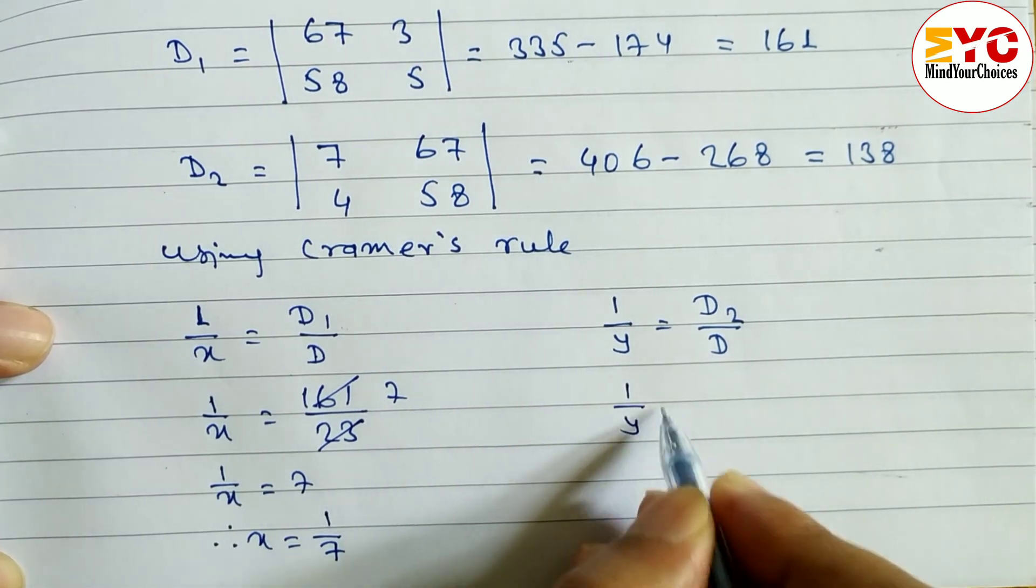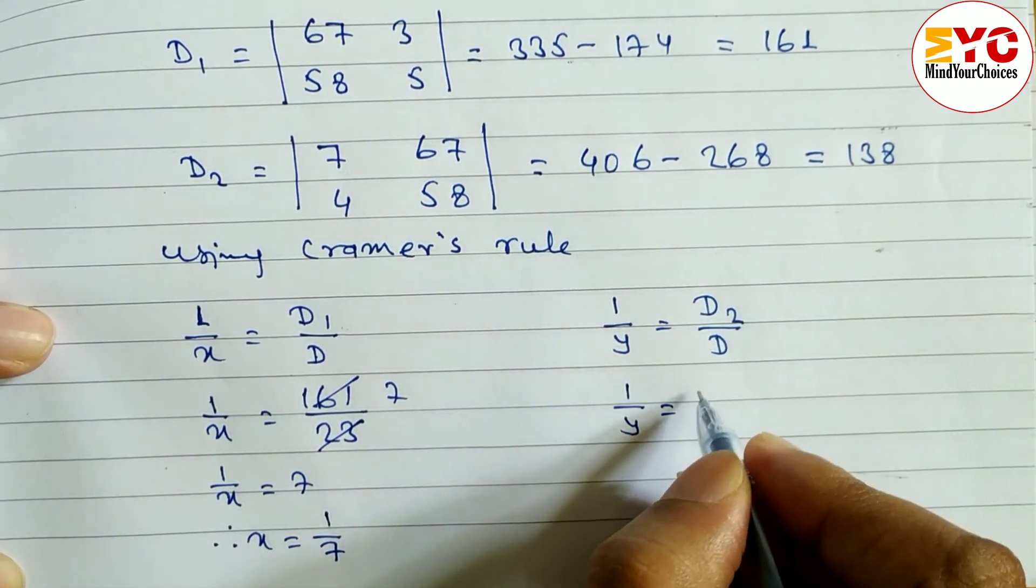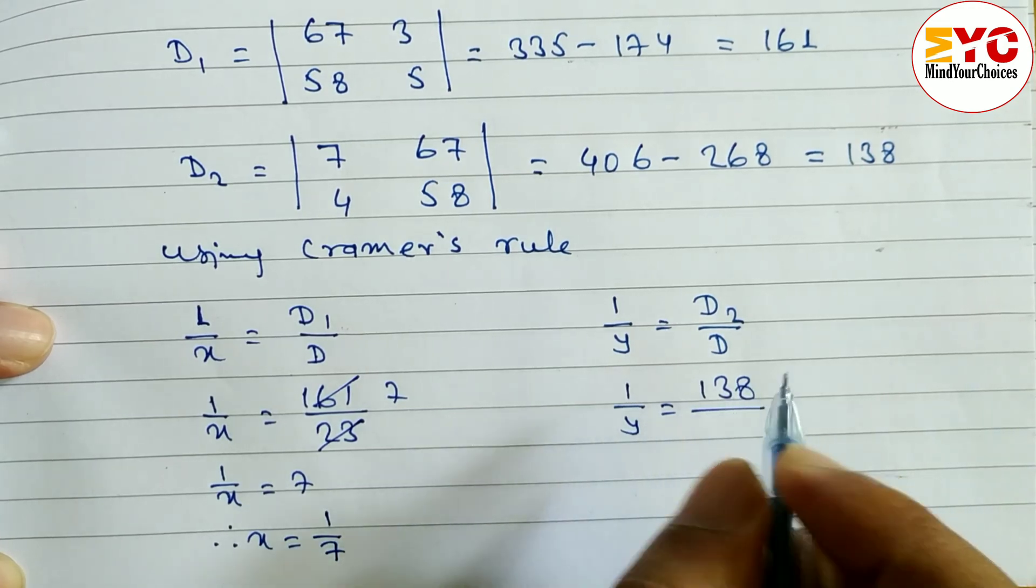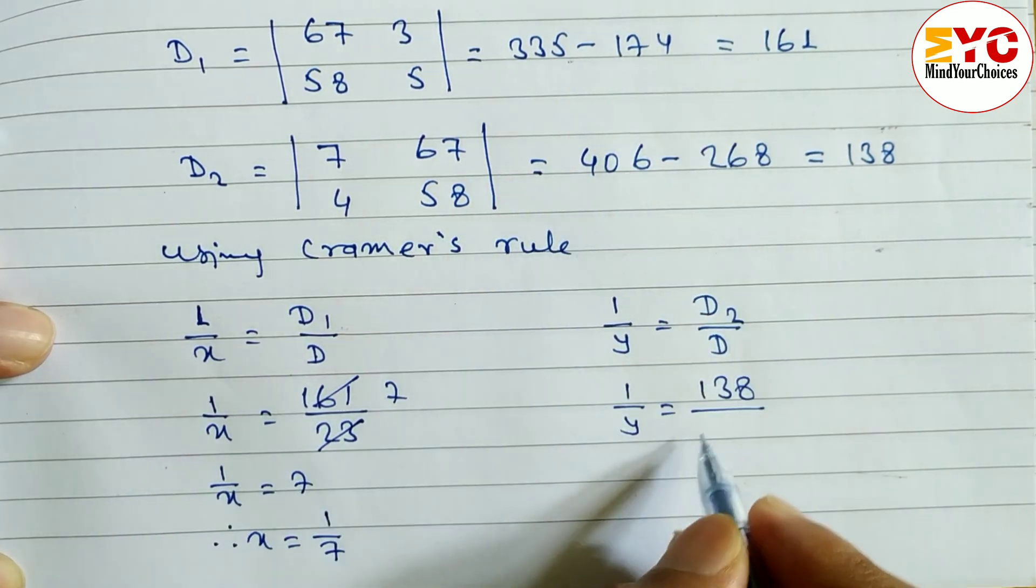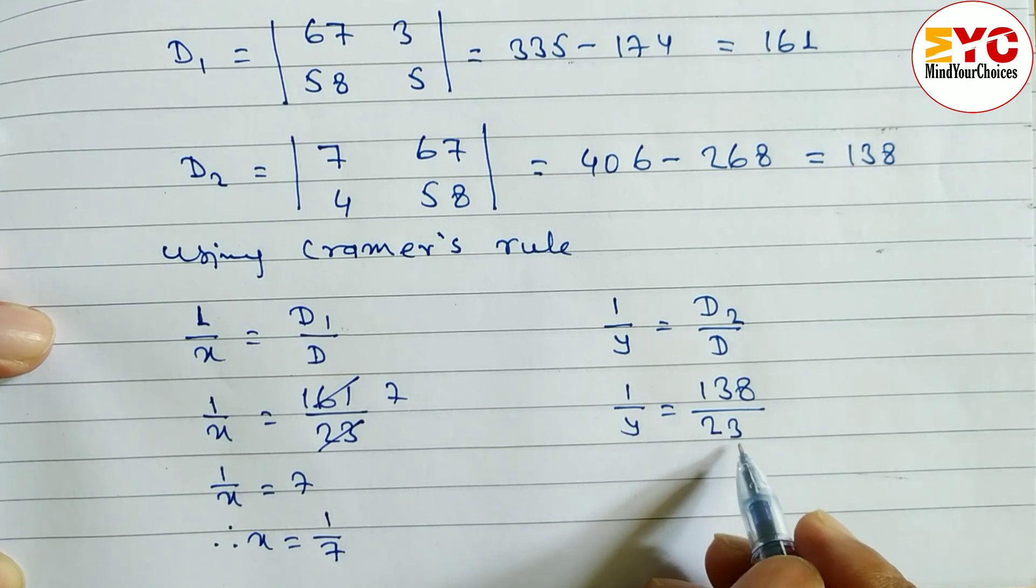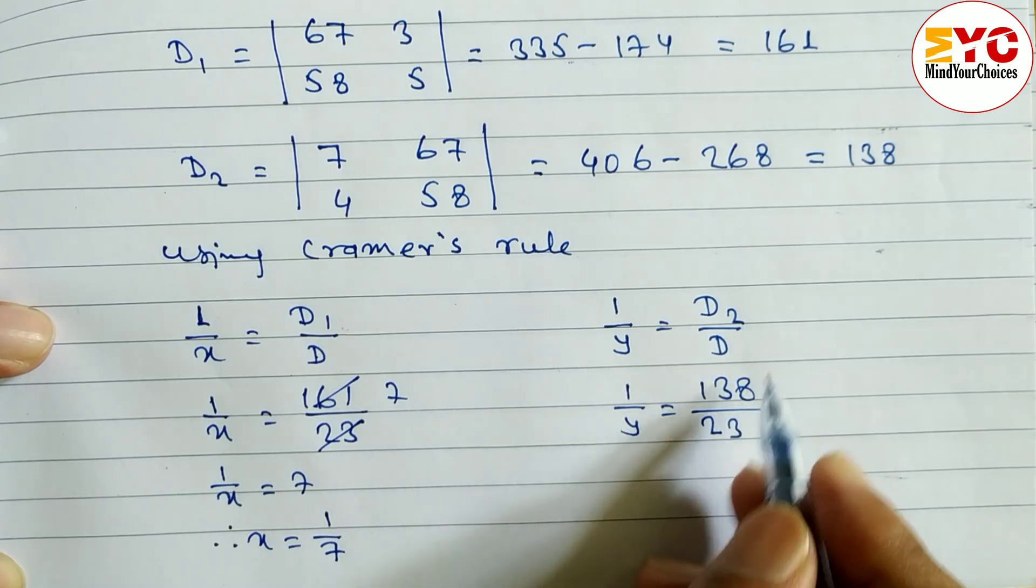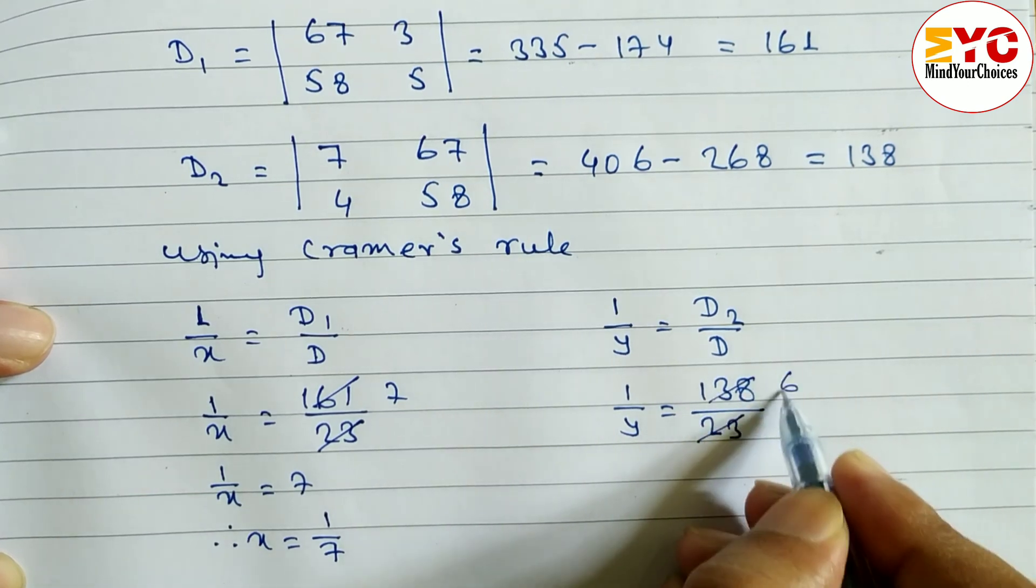Similarly 1 by y is equal to d2. d2 is equal to. Here we have 138 by d. Value of d is equal to. We have 23. Can we reduce this? By 6, 3 is of 18. 6, 2 is of 12, 11, 13. Yeah. By 6 we can do. By 6.